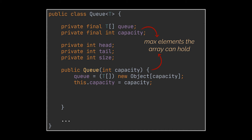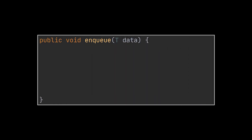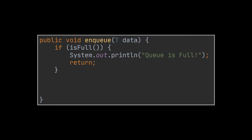The capacity is passed while instantiating the queue and is fixed, just like an actual array — though you could make it resizable as we did with stacks. In the constructor, size is initialized to zero, head to zero, and tail to minus one. Now let's start with the enqueue method. Before enqueuing the given item, we have to check if the queue is full, and if so we inform the user and return from the method.